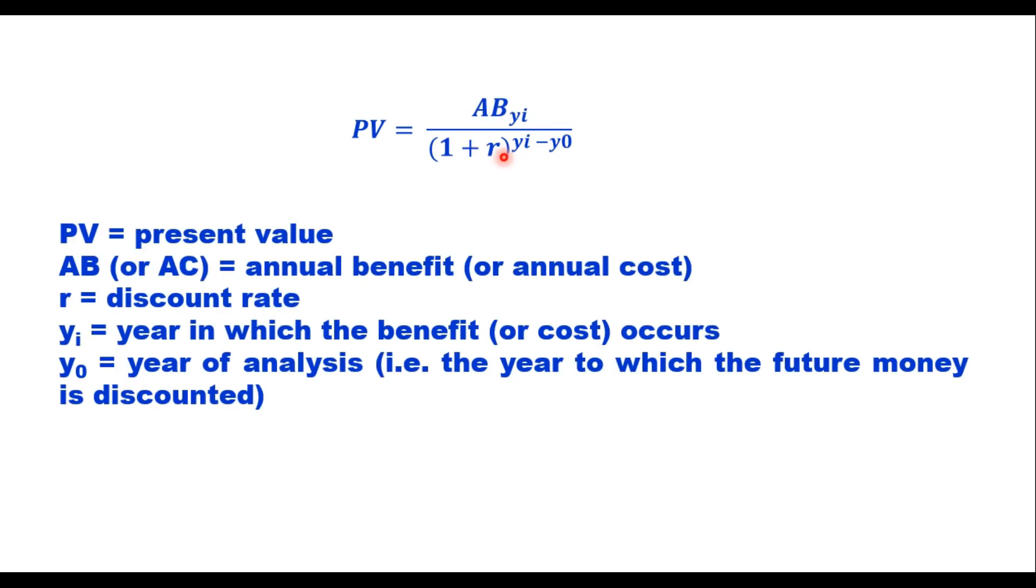R is discount rate, generally interest rate. And YI is the year in which the benefit or cost occurs. And Y0 is the year of analysis, that is the year to which the future money is discounted. Although I have explained this concept of time value of money in my earlier session, let me just take one example to illustrate how this present value is estimated.